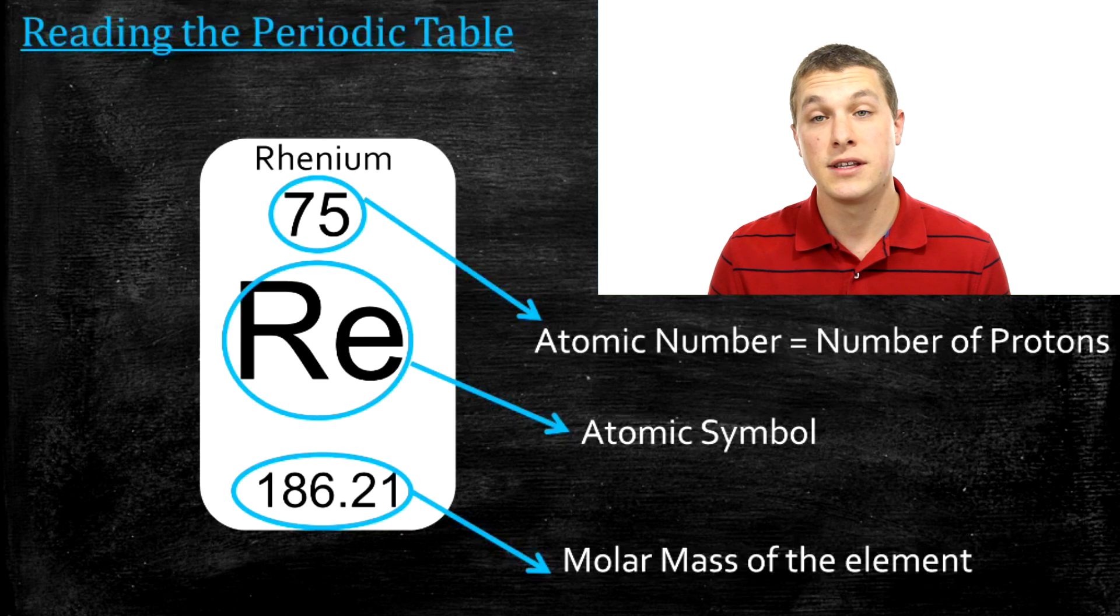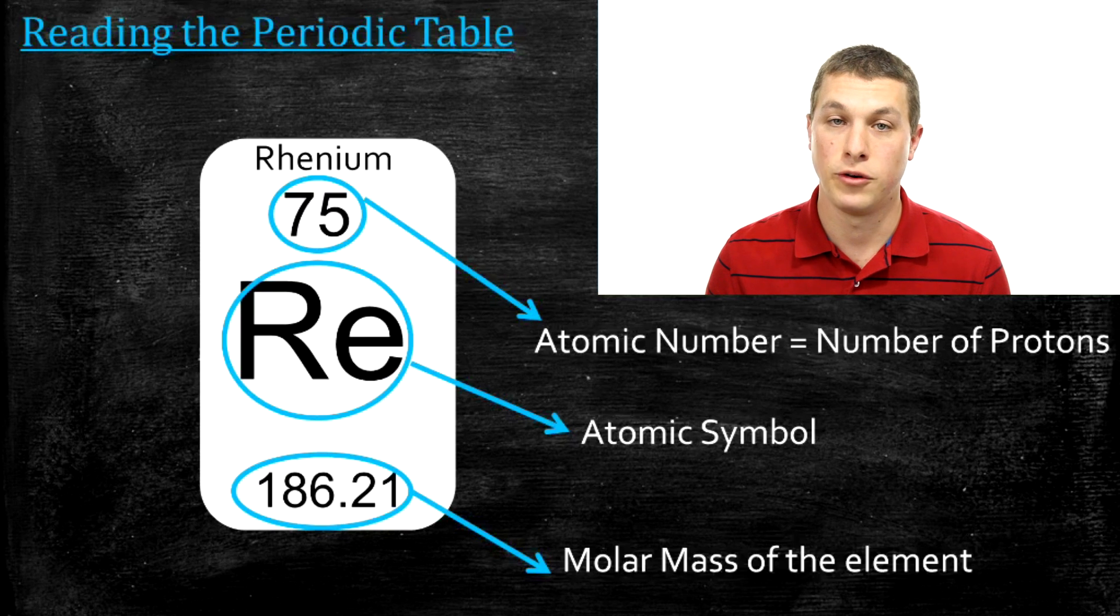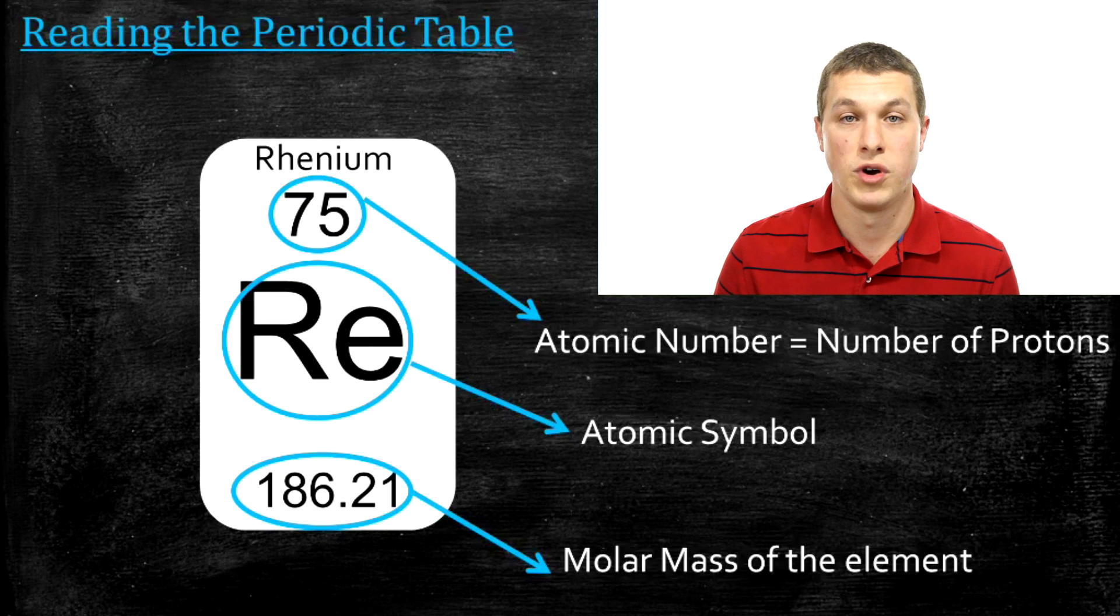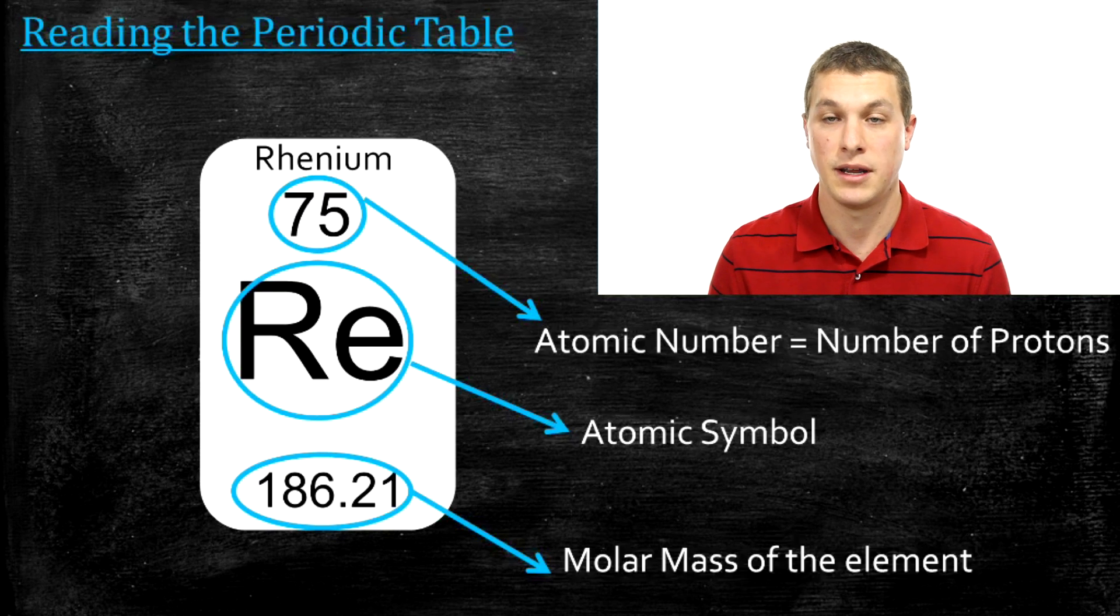Now below that, you see the atomic symbol. The atomic symbol is just like the chemical abbreviation. And it's important to be able to match up the chemical abbreviation with its number of protons. And the periodic table lets you do that.